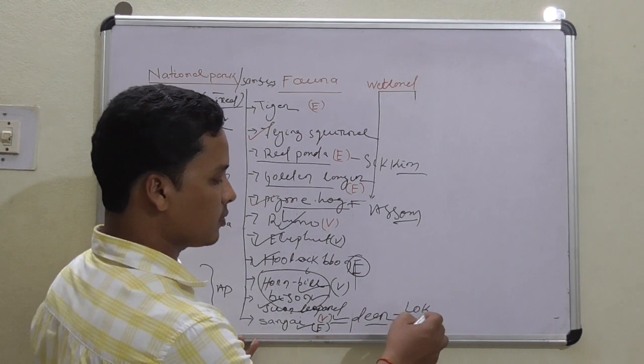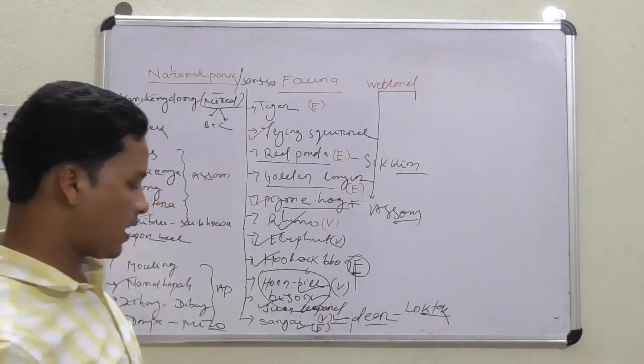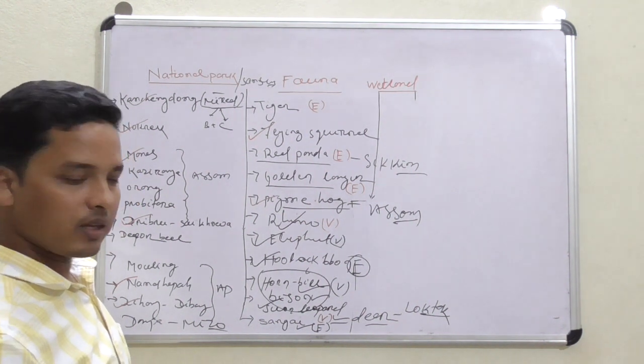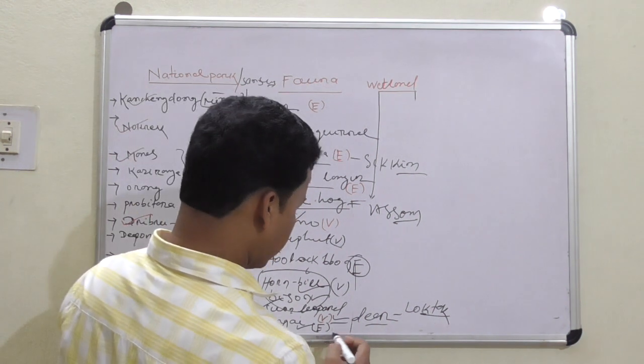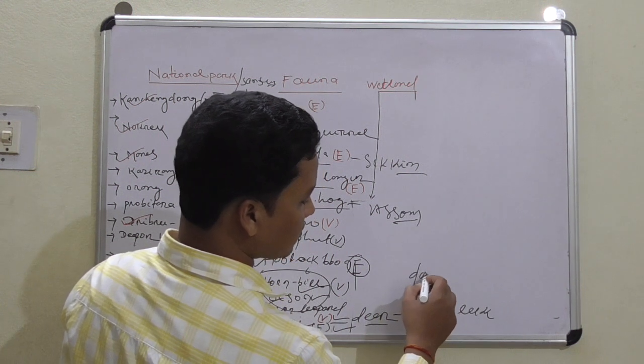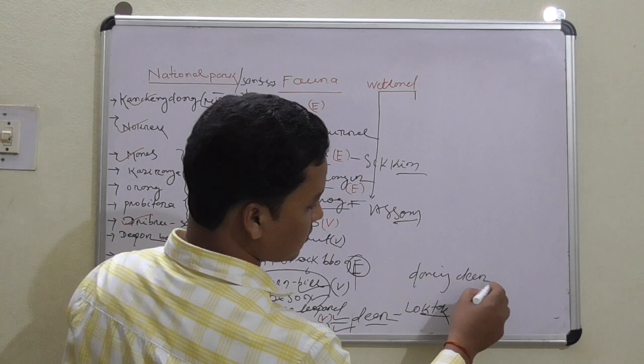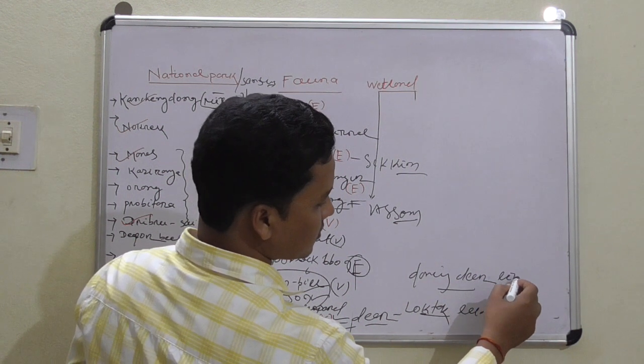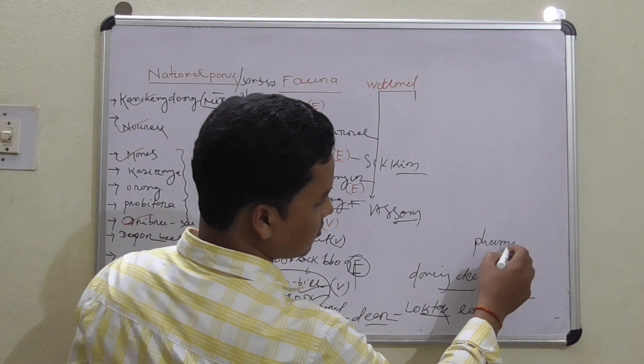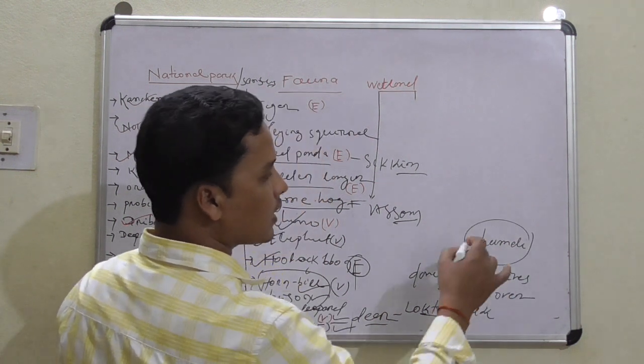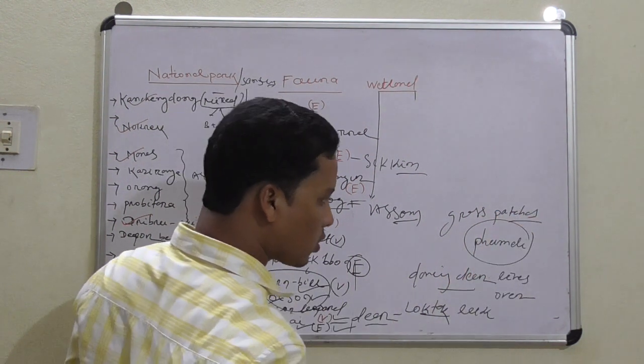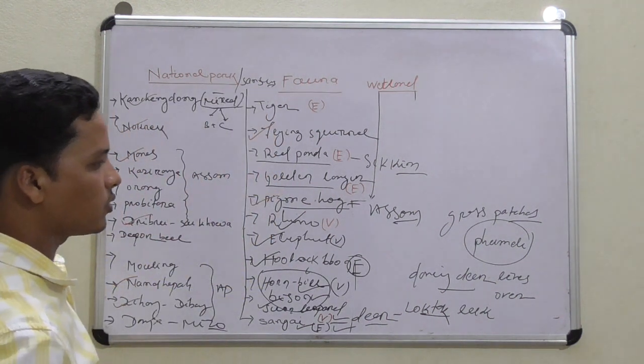Sangai is a deer species which is found in Loktak Lake. Sangai is also known as the dancing deer. These are endangered. They live over Phumdi. Phumdi are the circular grass patches found in Loktak Lake.